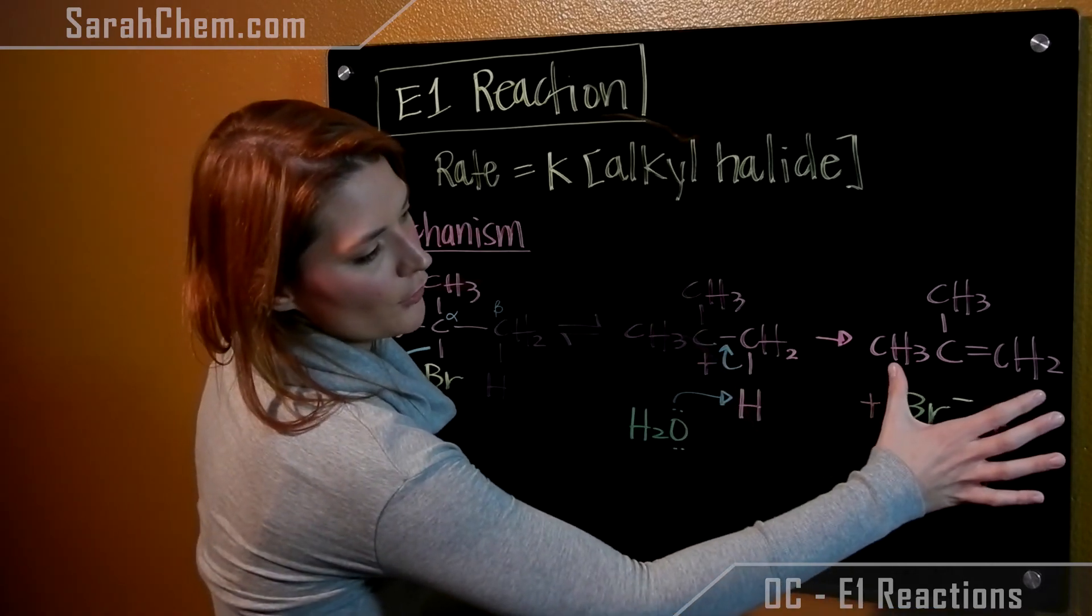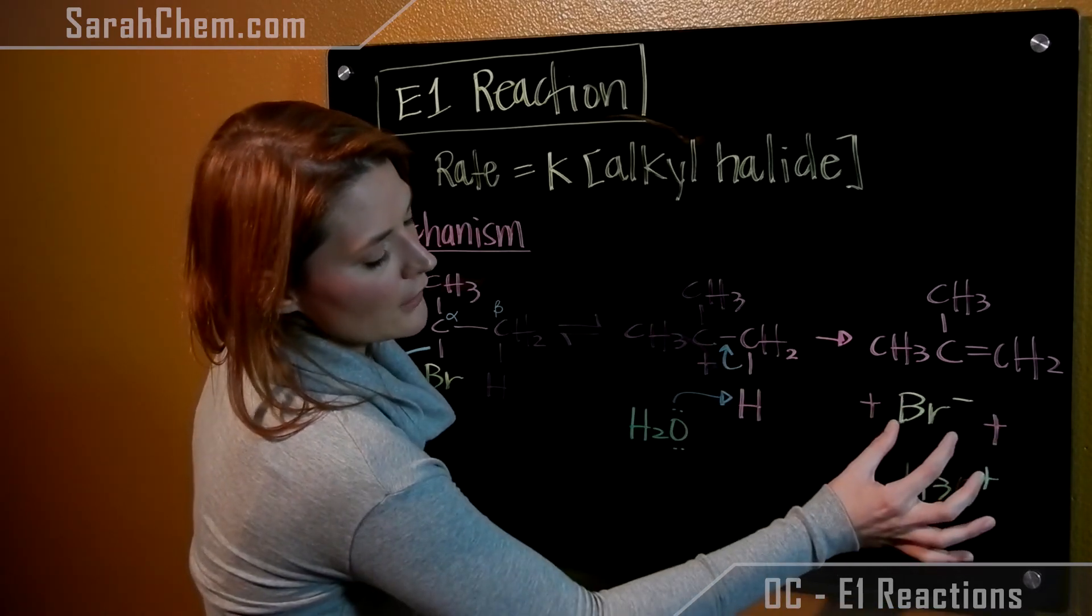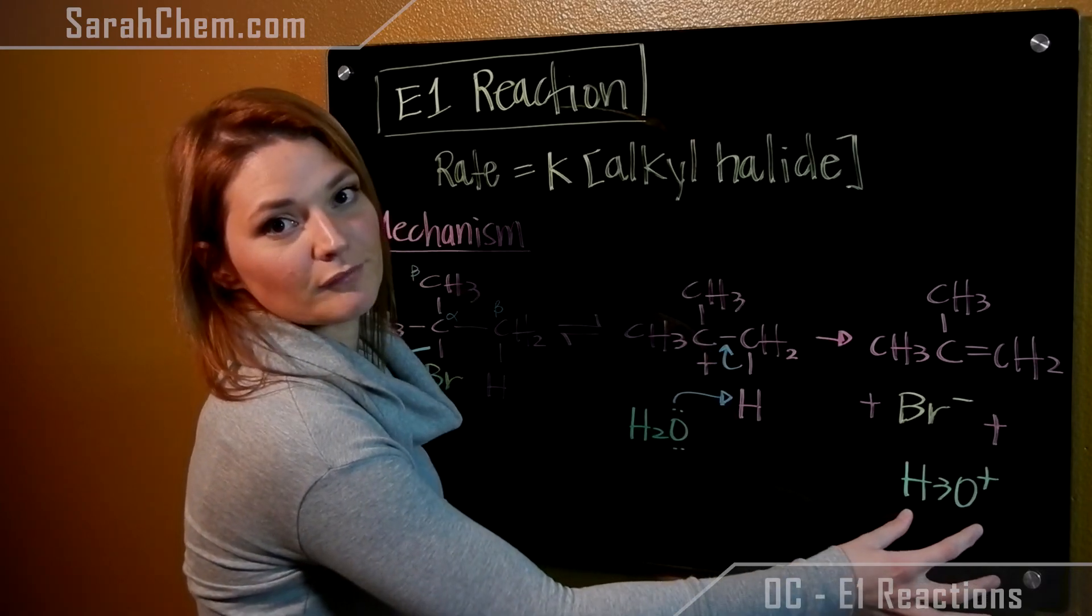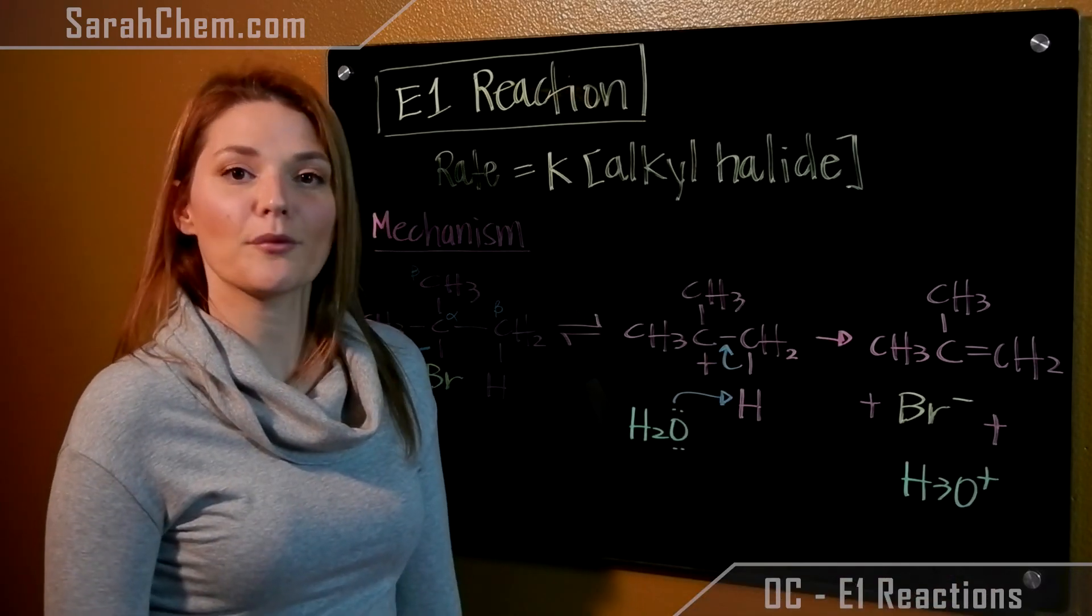After this has happened, there's your formation of your alkene, your kicked off bromine group, and now your protonated water. And that's what's happening in an E1 reaction.